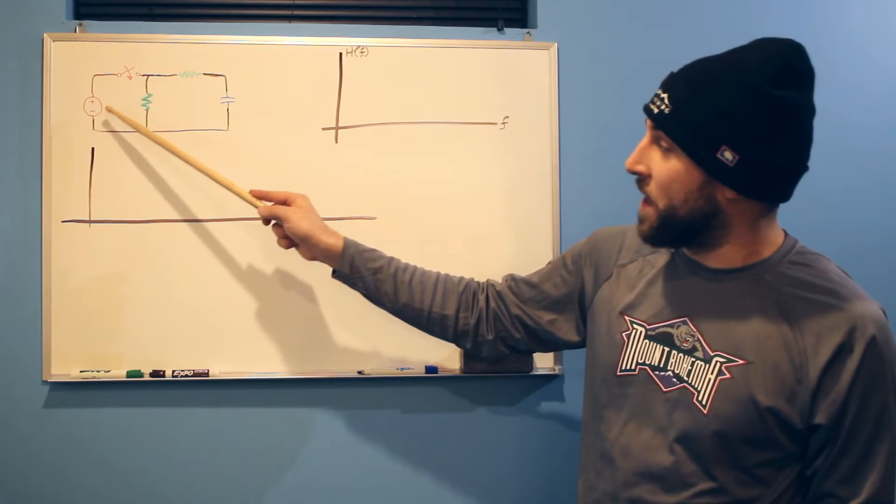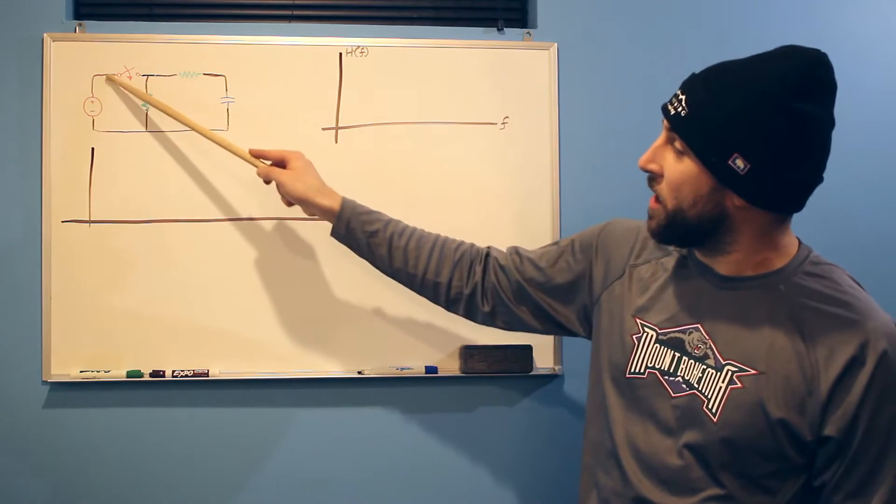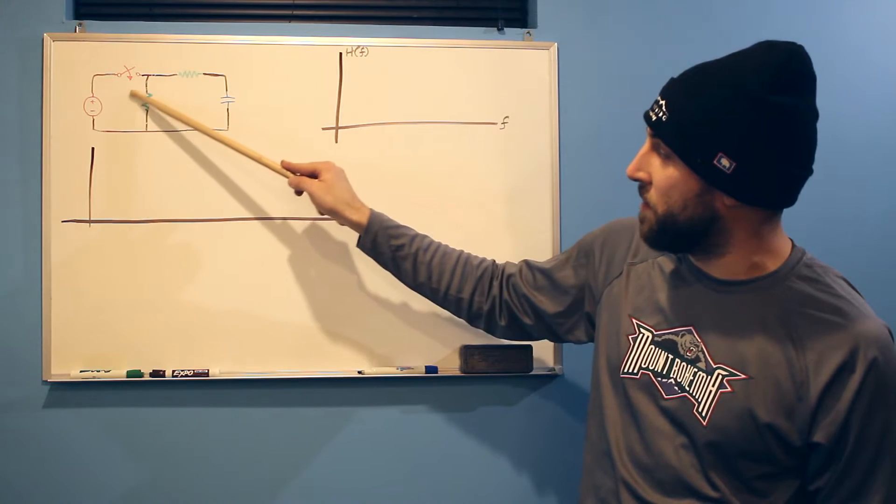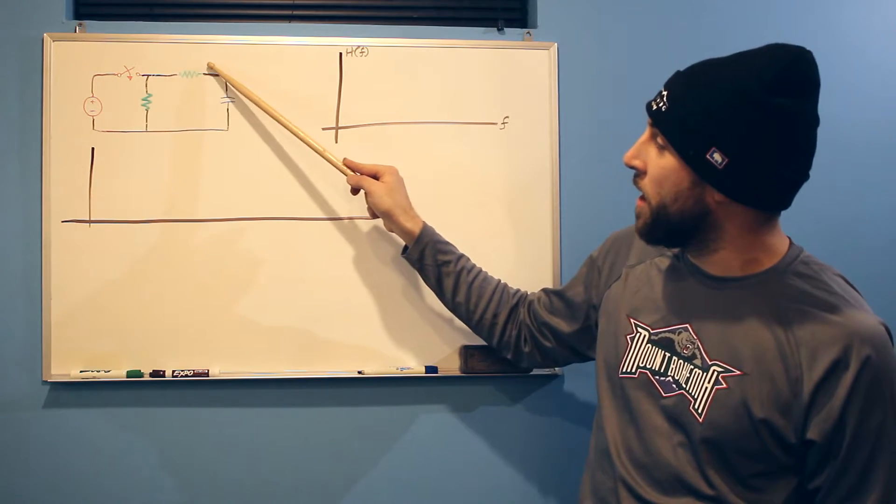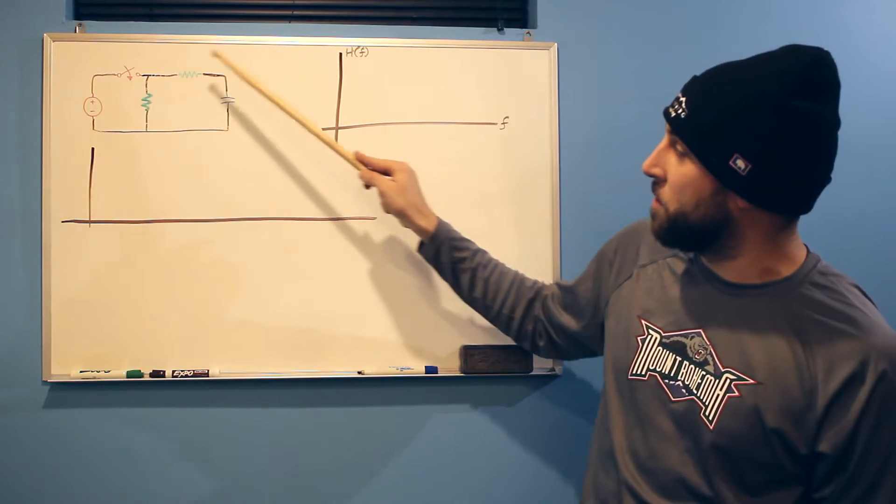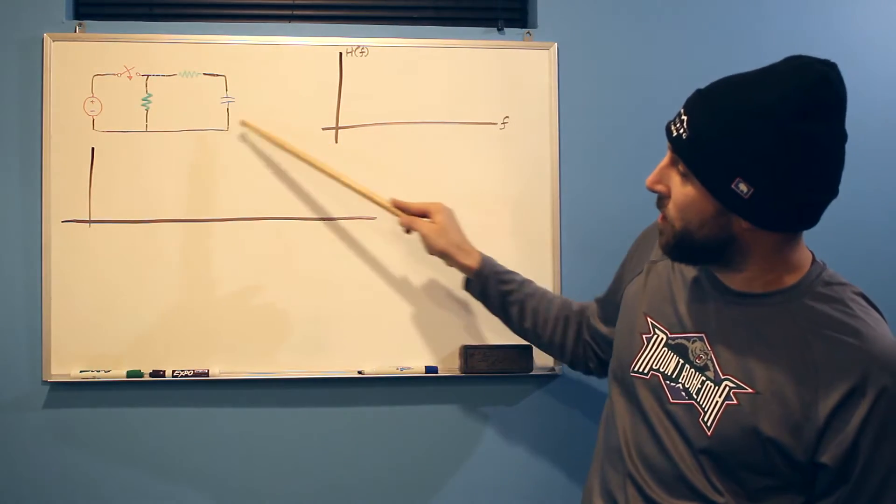So it consists of a voltage source, a switch we can control, turn it on and off, a drain resistor to drain voltage off of our capacitor, and a resistor just to separate our input node from our output node as well as the capacitor.